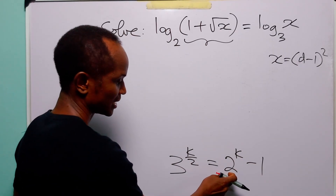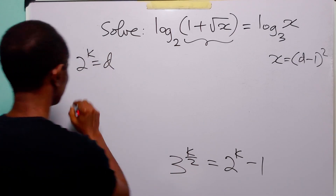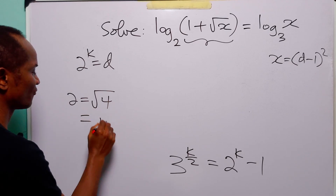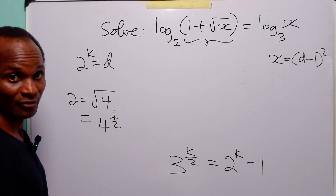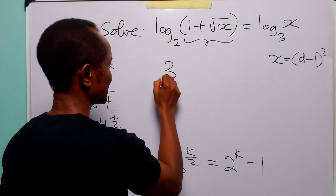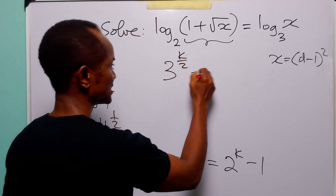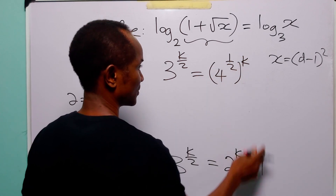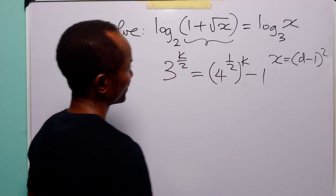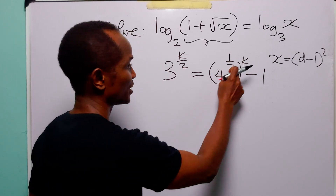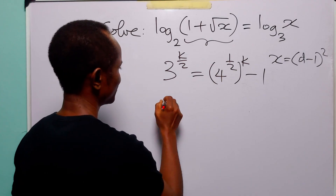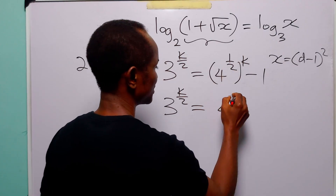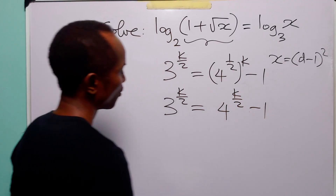Now let us remember that two is the square root of four, but we can also write this as four to the power half. So this equation can be written as three to the power k over two is equal to four to the power half, to the power k, minus one. To open the bracket we multiply these two powers, so we have three to the power k over two is equal to four to the power k over two minus one.